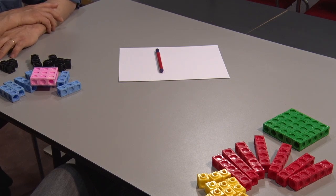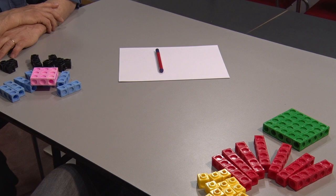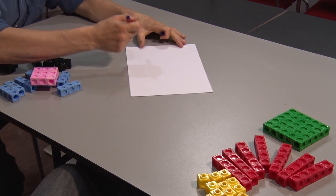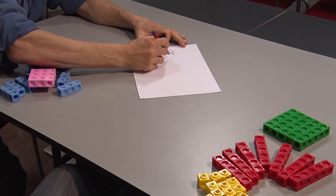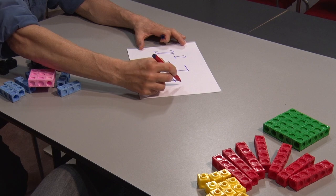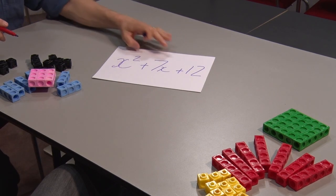Do you think we can make rectangles with an x squared, 7 x's, and 12 units? Let me make a note of that. Did you say x squared, 7 x's, and 12 units?